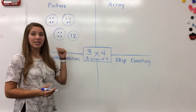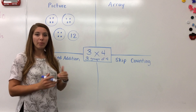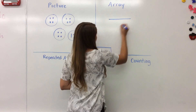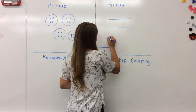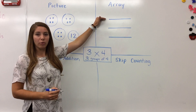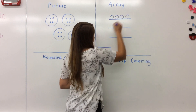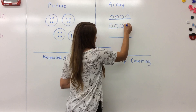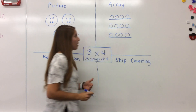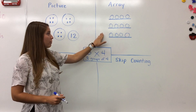Now an array is very similar to a picture model, but instead of doing three groups as circles, I'm going to do my three groups as rows. So I'm going to draw three lines horizontally across my paper. And on each of these rows, I'm going to put four objects — I like to use circles. Again, I've got my three groups, or three rows of four.